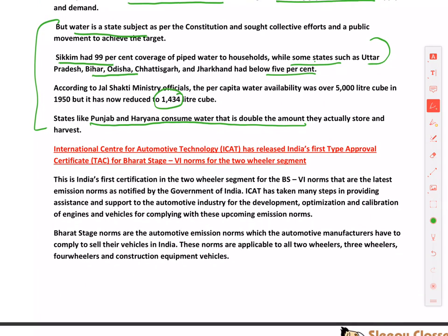ICAT — the International Center for Automotive Technology — has released India's first Type Approval Certificate (TAC) for Bharat Stage VI norms for the two-wheeler segment. This is the first BS6 certification in the two-wheeler segment for the latest emission norms notified by the Government of India. ICAT provides assistance and support to the automotive industry for development, optimization, and calibration of engines and vehicles to comply with BS6 norms.